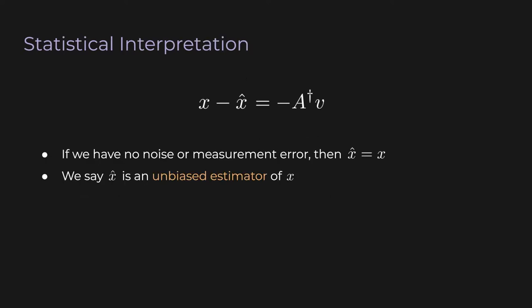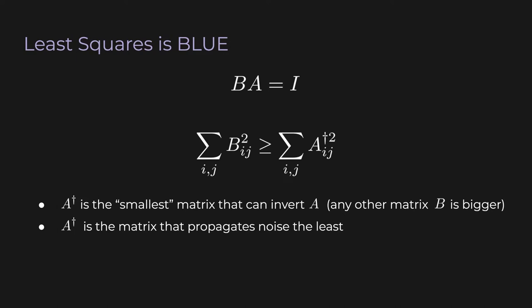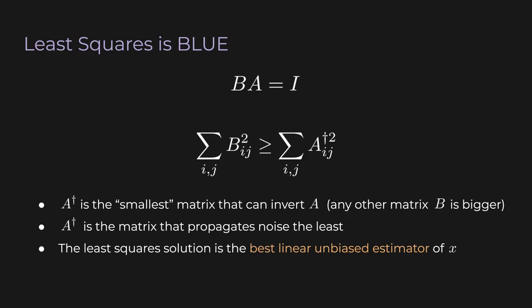This is important because the difference between x and x-hat is negative A-dagger·v. If noise v is small, the difference will be small. But we don't have control over v — it's just nature, things we haven't modeled. The matrix A, and consequently A-dagger, represents our system. So if we make A-dagger small in the technical sense just described, then A-dagger·v is going to be small, meaning the difference between x and x-hat is small. A-dagger is the matrix that propagates noise the least.